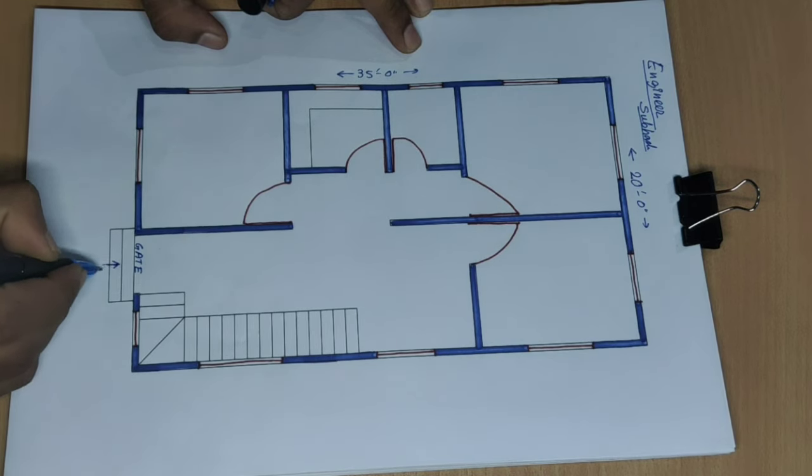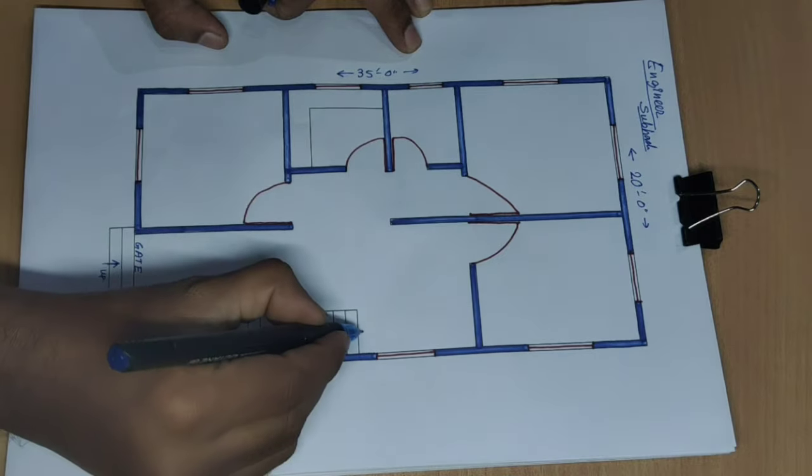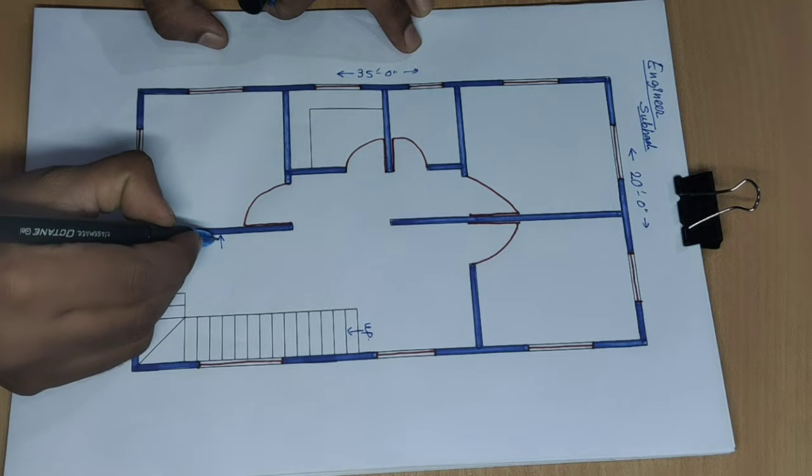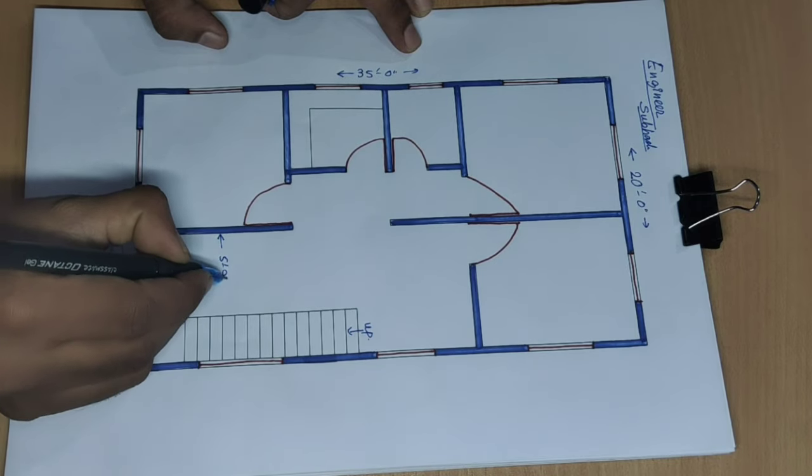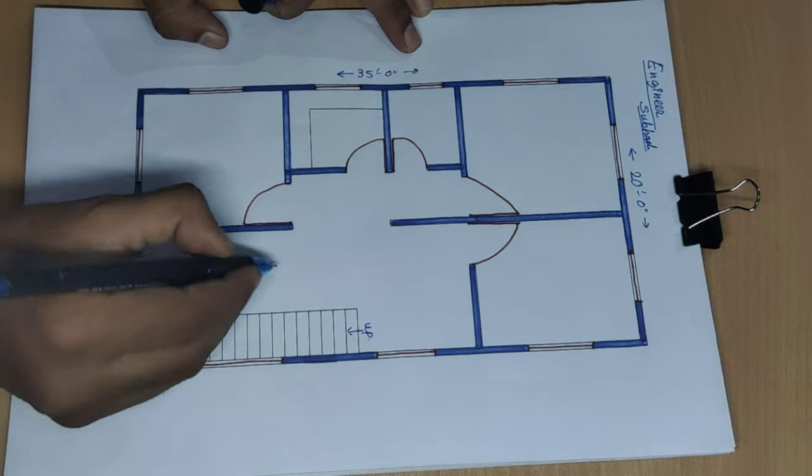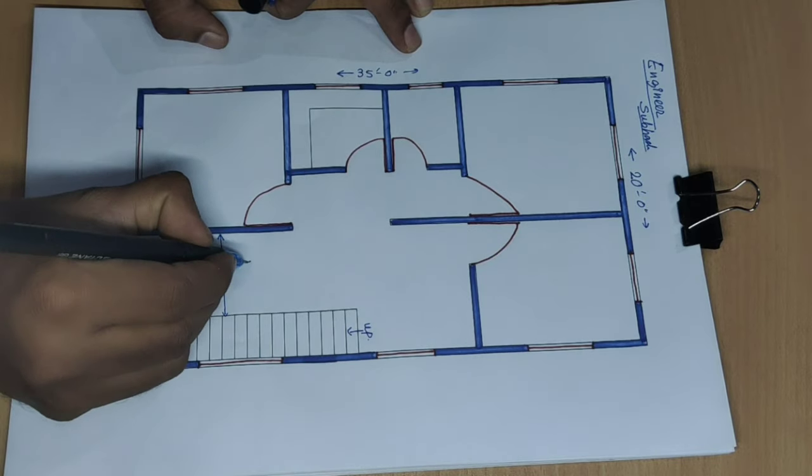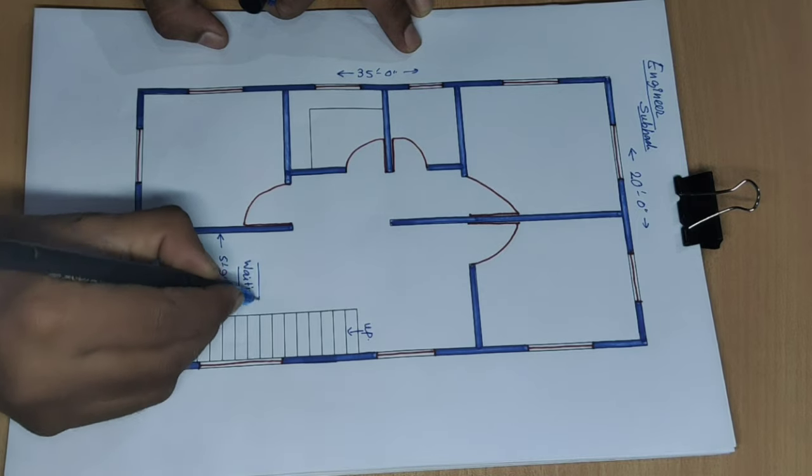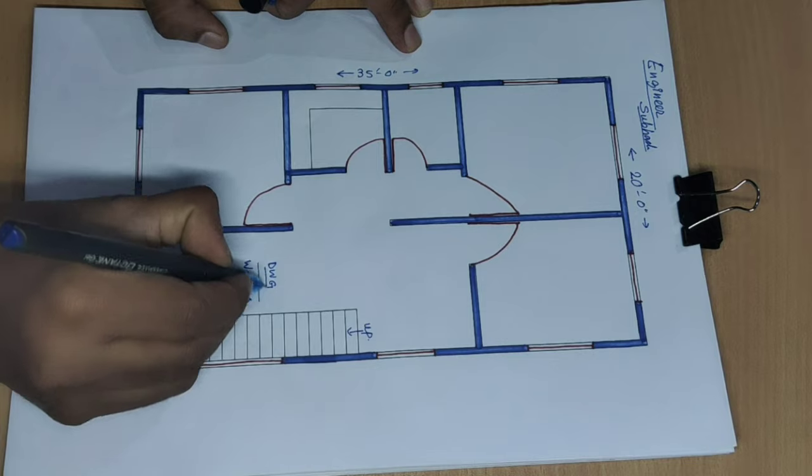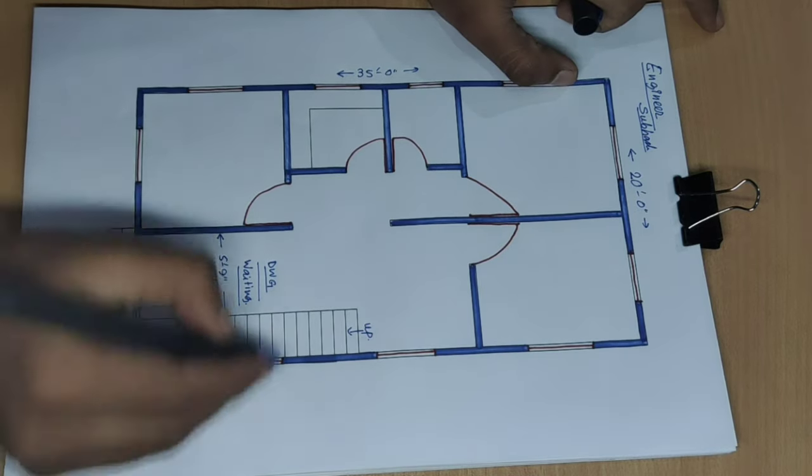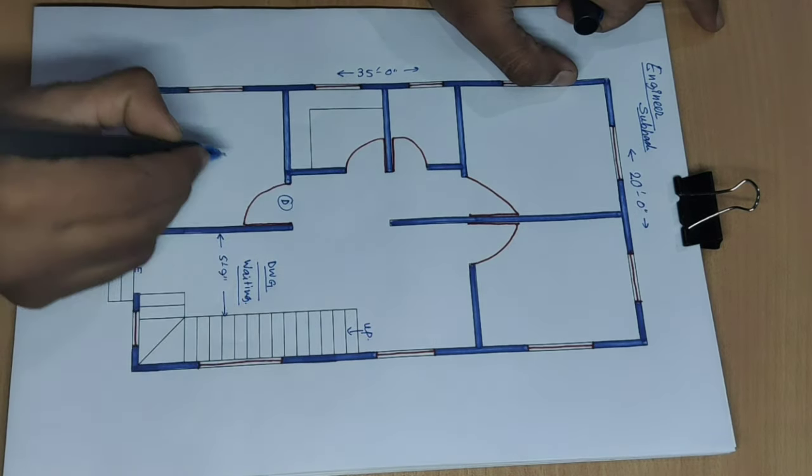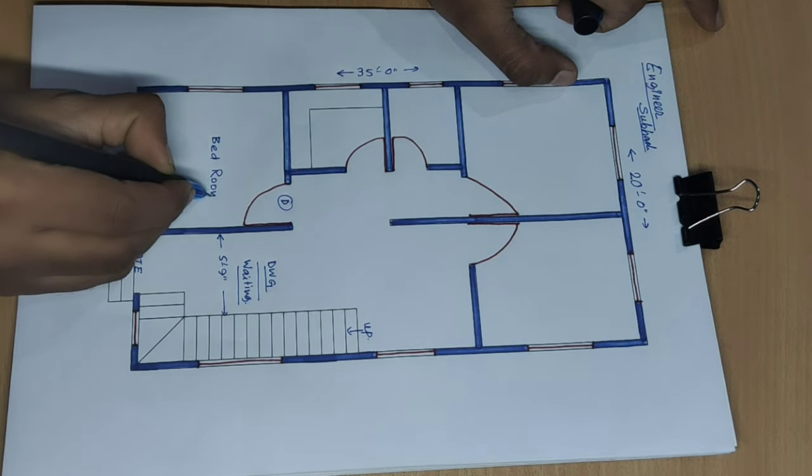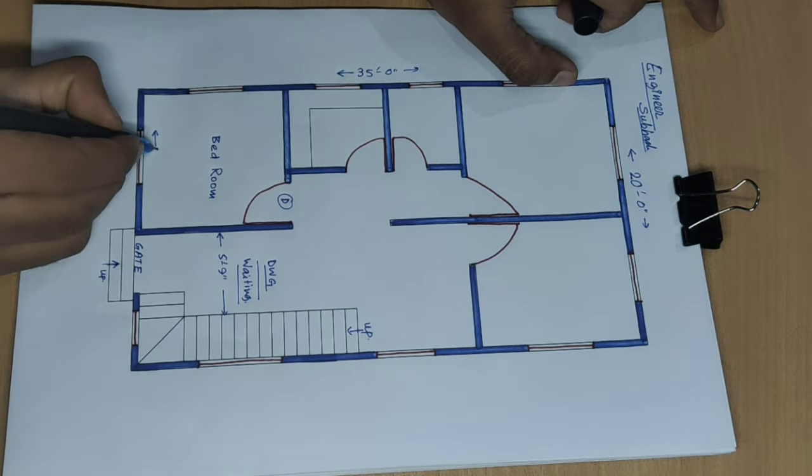Upstairs start. Distance this side 5 feet 9 inch. Drawing door and bedroom, size 10 feet.